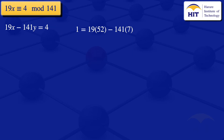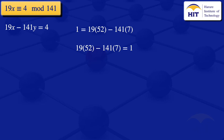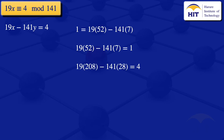Rearranging: 19 × 52 − 141 × 7 = 1. But in our target equation we need a 4 on the right hand side, not a 1. So we multiply this equation by 4: 52 × 4 = 208 and 7 × 4 = 28. Our equation becomes 19 × 208 − 141 × 28 = 4.